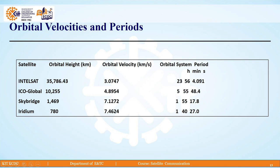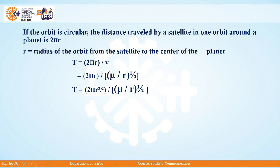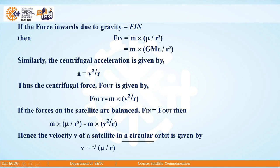Here are some examples of orbital velocities and periods. The satellite Intelsat, at a height of 35,786.43 km, revolves with an orbital velocity of 3.0747 km/s and a period of 23 hours, 56 minutes, and 4.091 seconds. Similarly, we have Eco-Global Sky Bridge and Iridium satellites. With the help of these equations, we can easily calculate the orbital period and the velocity of a satellite in circular orbit. Thank you.